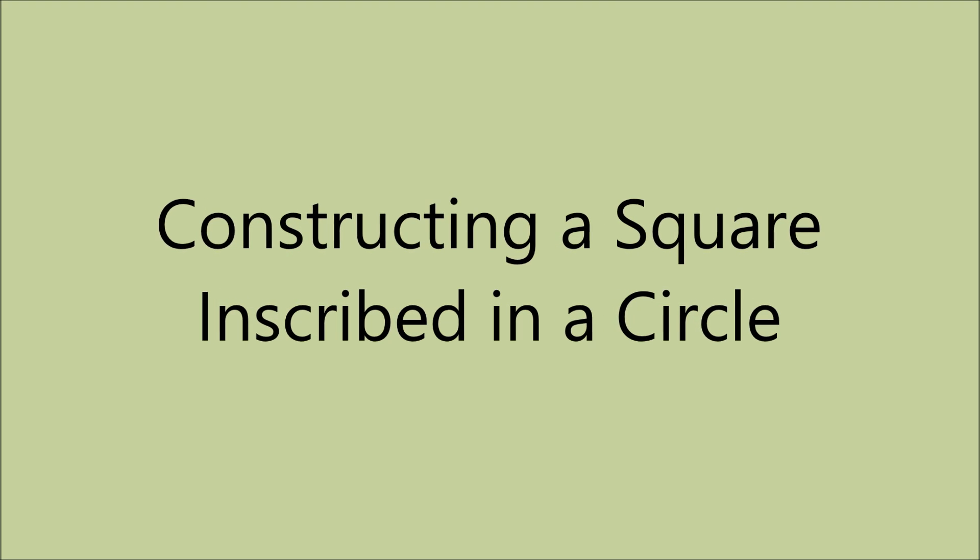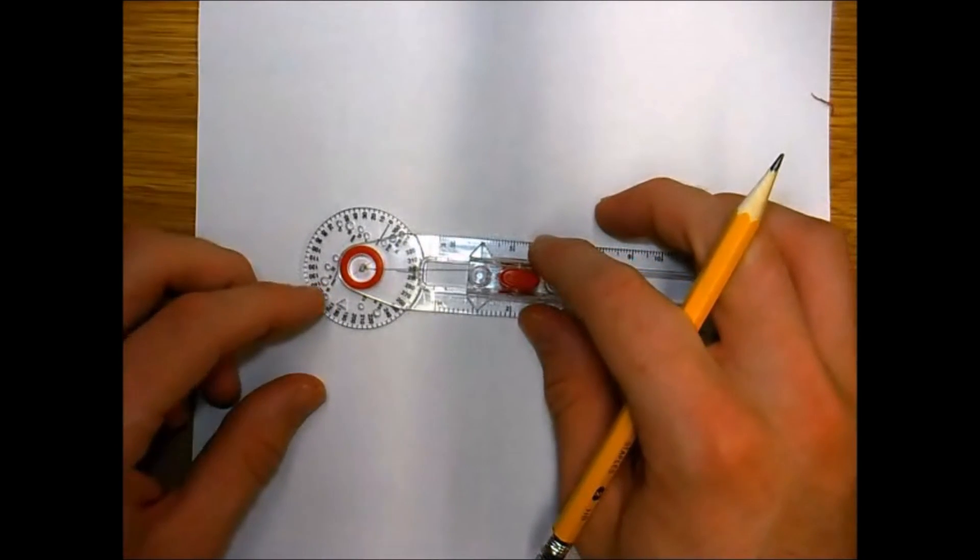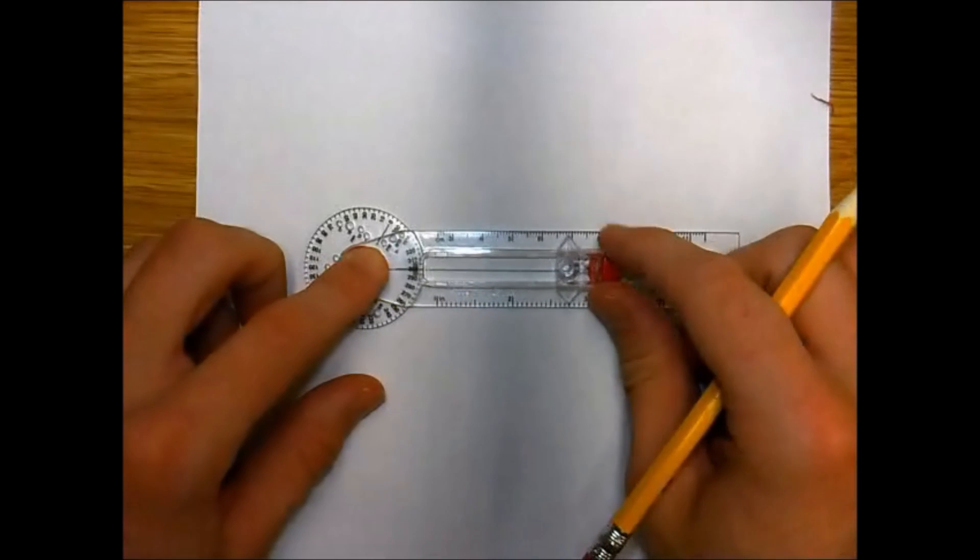In this video the goal is to construct a square inscribed in a circle. So we start off with some line segment AB and we're going to set the length of the compass greater than the halfway point.